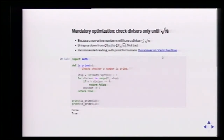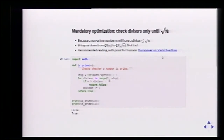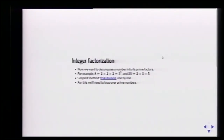Every non-prime number will have a divisor less than or equal to the square root. How can we use that to do something remotely useful? Integer factorization — we want to decompose a number into factors. For example, 8 is 2 × 2 × 2. The simplest method is trial division: try all the prime numbers and see if we can divide the number by them.